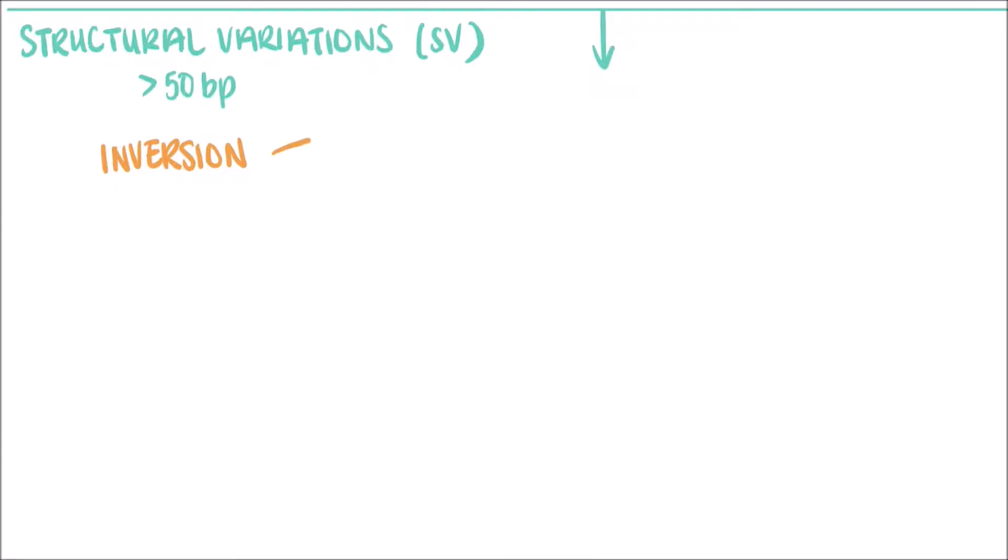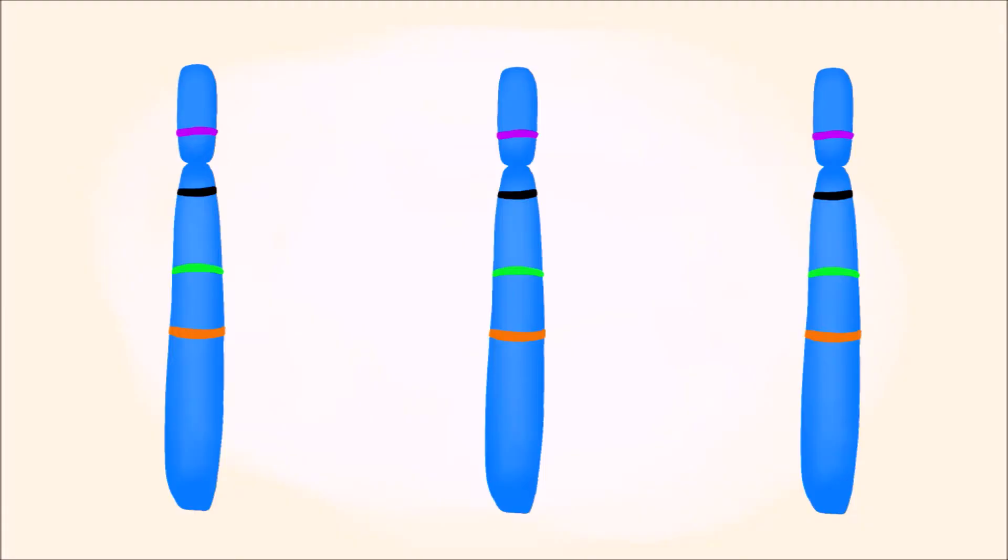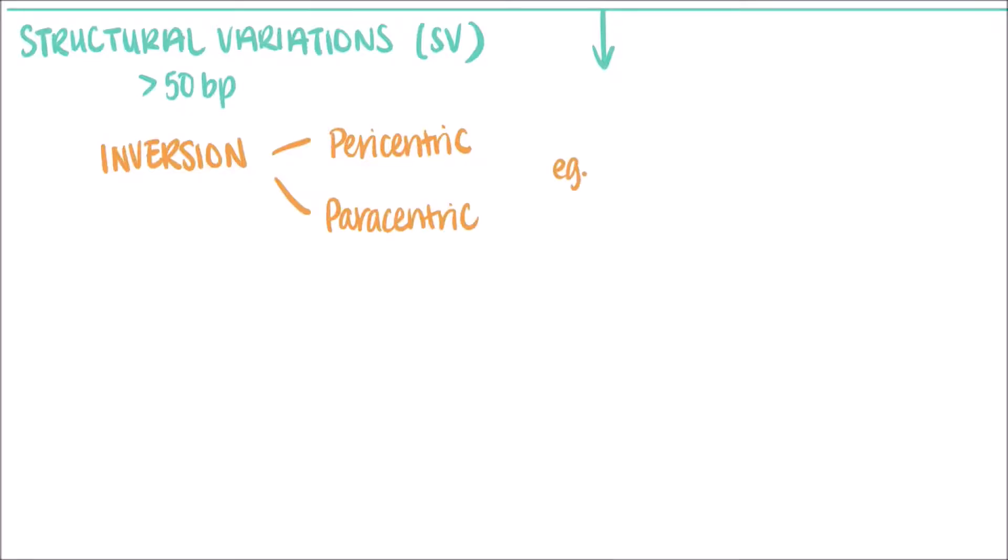Inversions can be split into two categories. Pericentric inversions occur when the region of chromosome that becomes inverted includes the centromere, as seen here. Paracentric inversions occur when a region of chromosome not including the centromere becomes inverted. Hemophilia A is an example of a medical condition that is often caused by inversions.